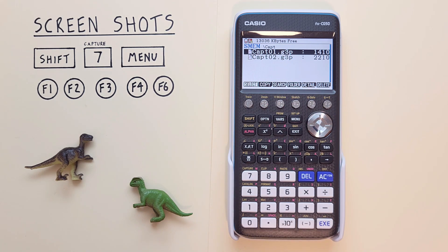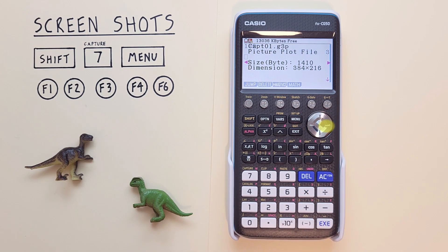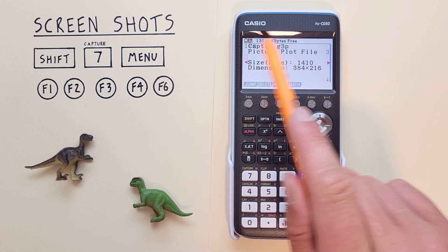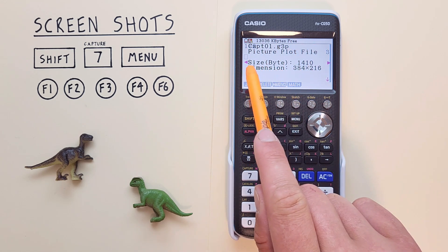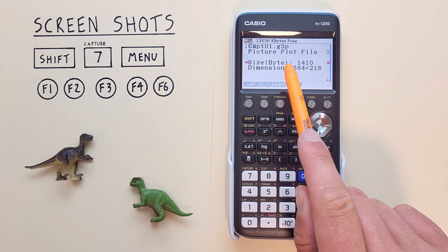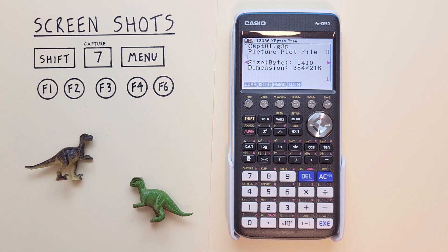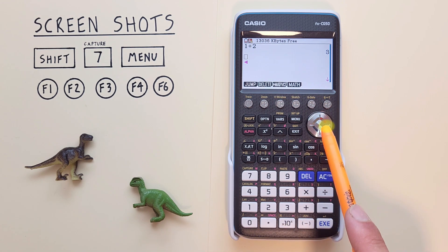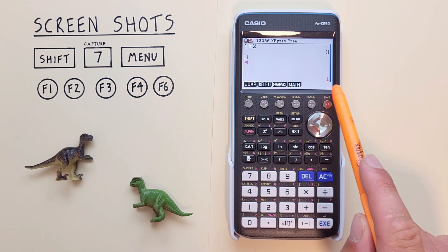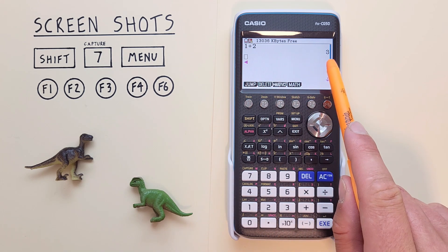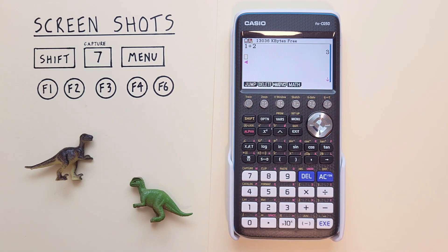If we want to view it, we can just highlight it and press the right arrow, which first brings up the details, telling us the size in bytes of the screenshot, as well as the size in dimensions. If we press right again, we see our screenshot. There we go. That's what was on our screen when we saved our first screenshot.